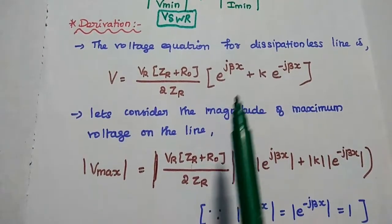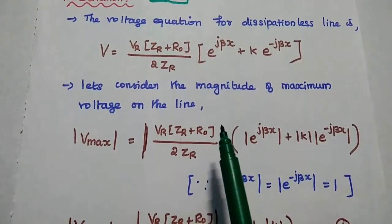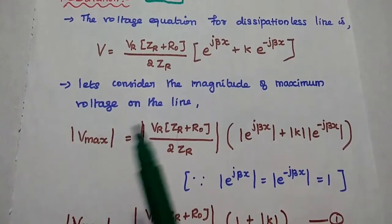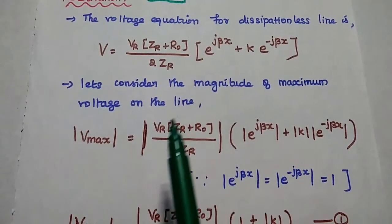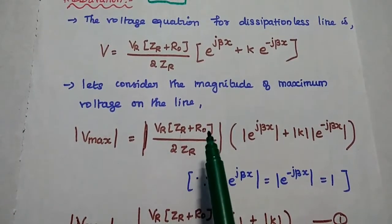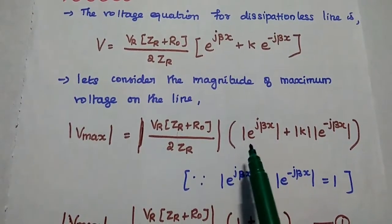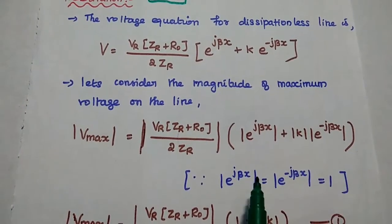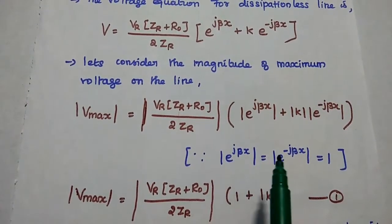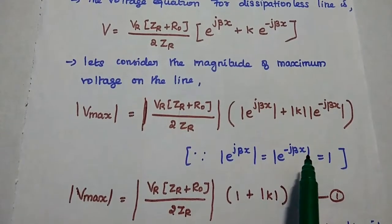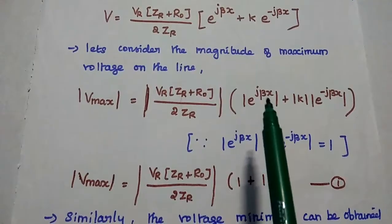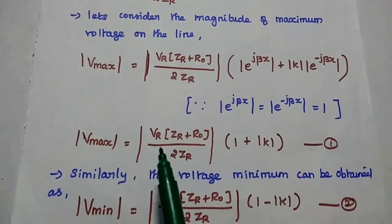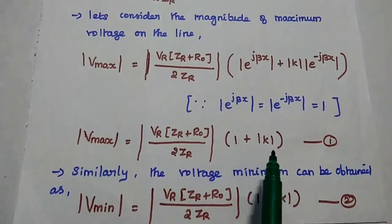Here K is the reflection coefficient. Next, we are going to consider the magnitude of maximum voltage on the line. We take the modulus of Vr into Zr plus R-naught divided by 2Zr, into modulus of E-power J-beta-X plus modulus K into modulus of E-power minus J-beta-X. Since modulus of E-power J-beta-X and modulus of E-power minus J-beta-X are both equal to 1, we get the magnitude of maximum voltage as Vr into Zr plus R-naught by 2Zr, into 1 plus modulus of K.